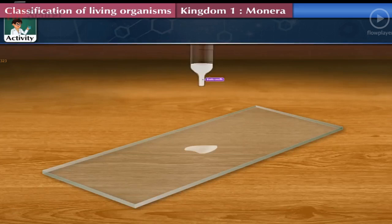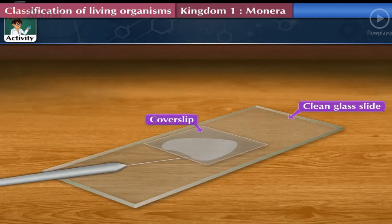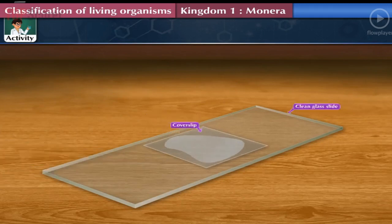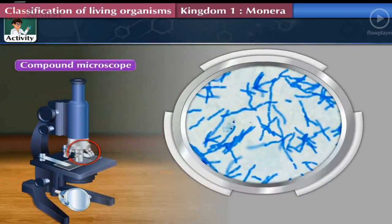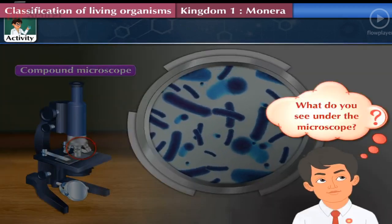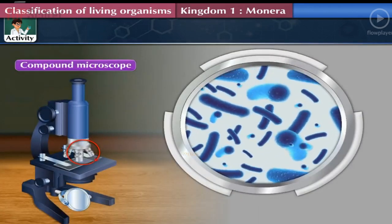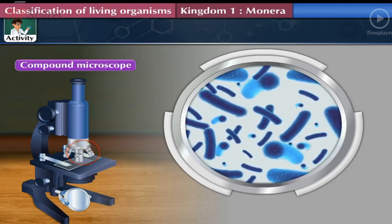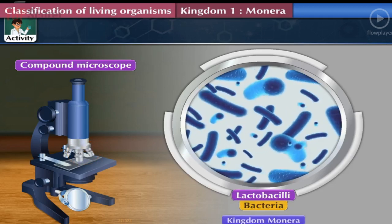Activity: Take a small drop of curd or buttermilk on a clean glass slide. Add one drop of water to dilute it. Carefully put a clean coverslip on the slide with the help of a mounting needle. Observe this prepared slide first under low power and then under high power of a compound microscope. We see small, rod-shaped microbes moving under the microscope — these are Lactobacilli bacteria, which belong to Kingdom Monera.